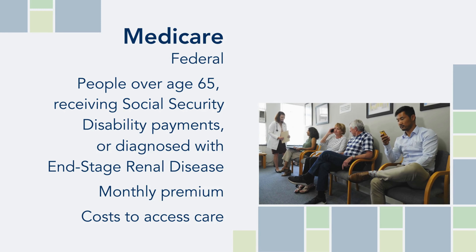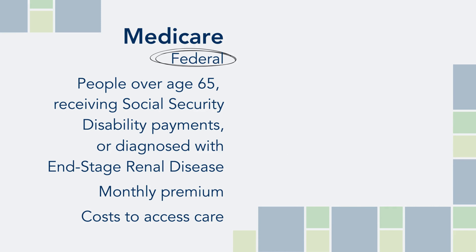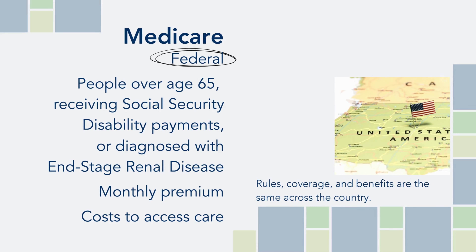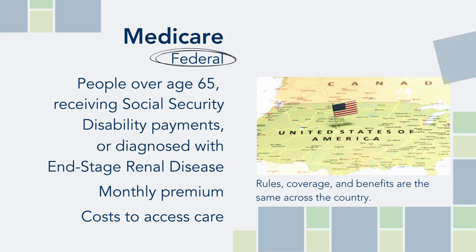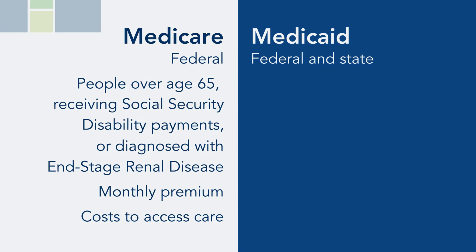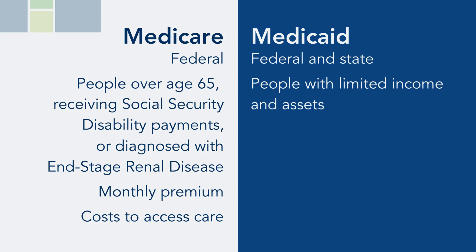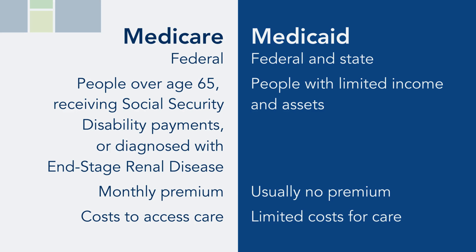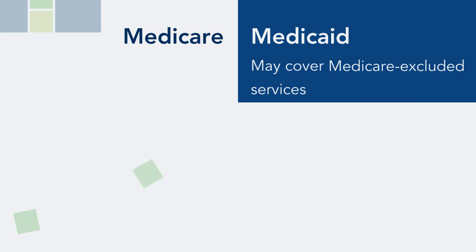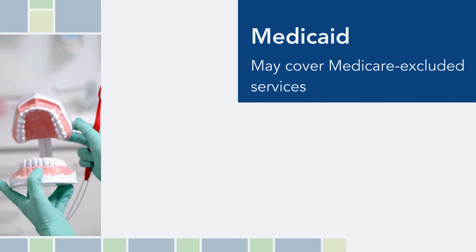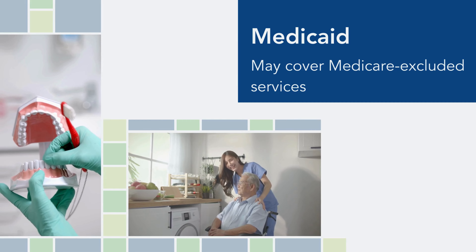Because Medicare is a federal program, the rules, coverage, and benefits are the same across the country. Medicaid is a federal and state program that covers medical care for people who have limited income and assets. Most Medicaid programs do not have a premium, and the costs associated with accessing care are limited. Sometimes Medicaid can cover care that isn't covered by Medicare, like dental care and long-term supports and services.